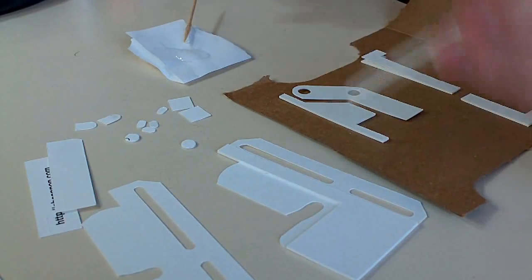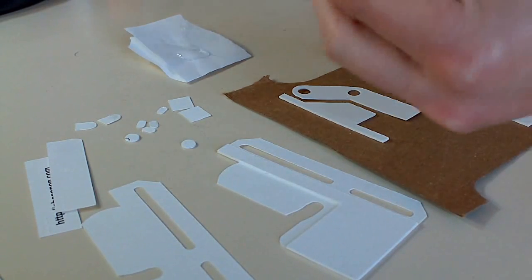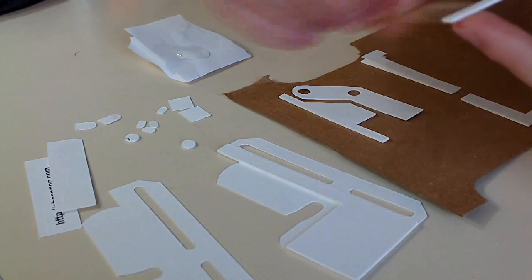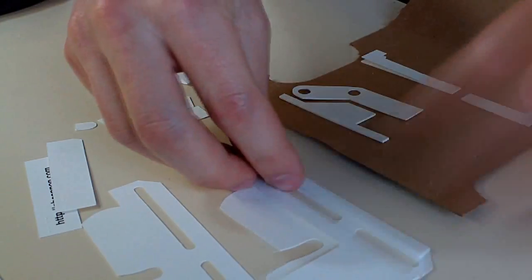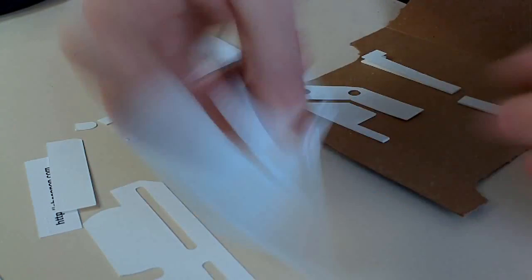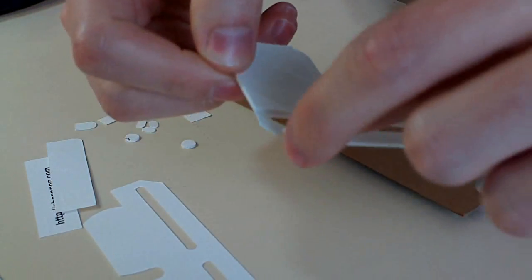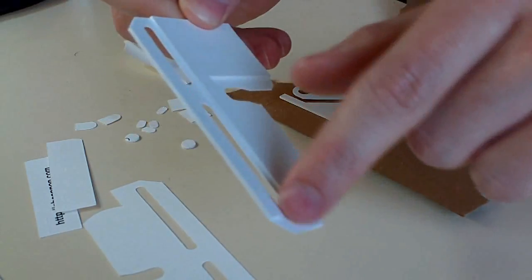And I do the same thing with the long skinny piece. This one is lined against this bottom edge and in between these two angle cuts.